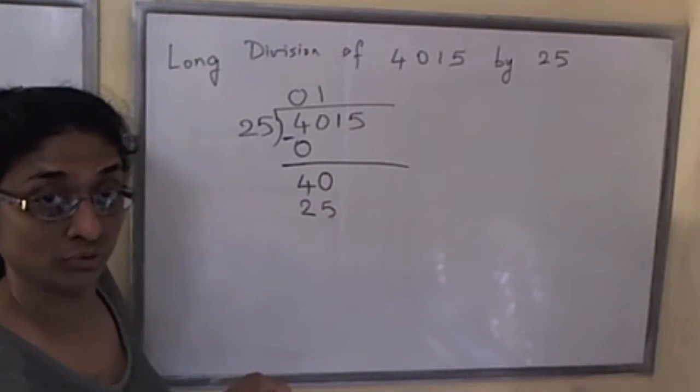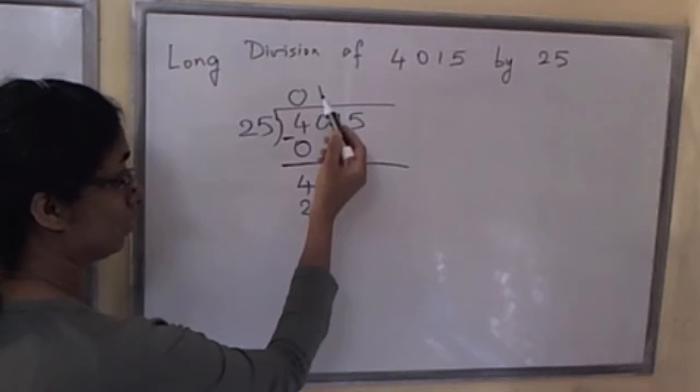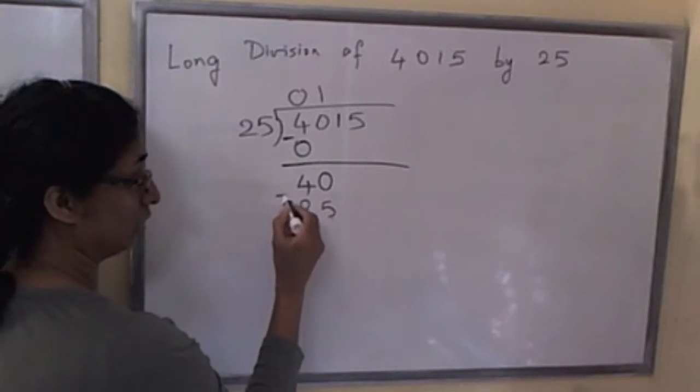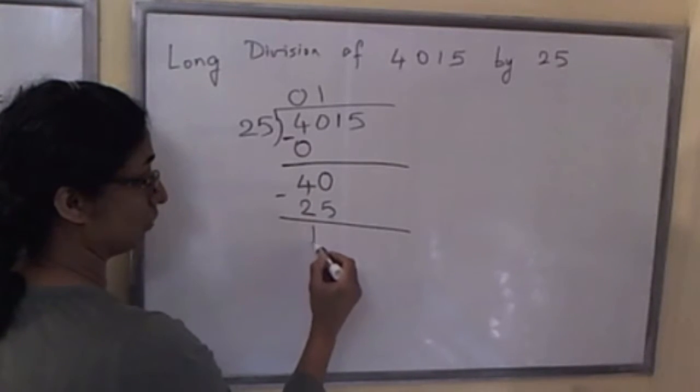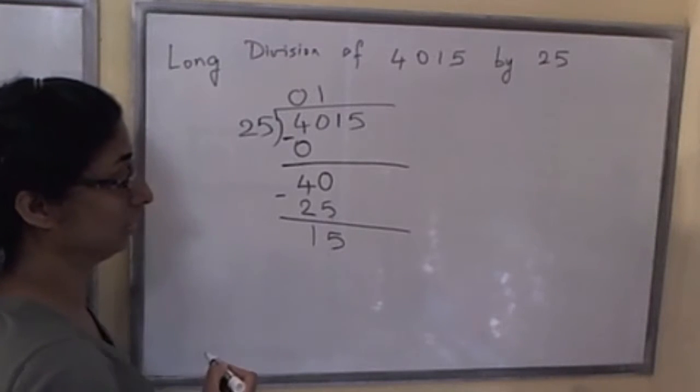So 25 times 1 is 25. Do a subtraction, so we get 15 here.